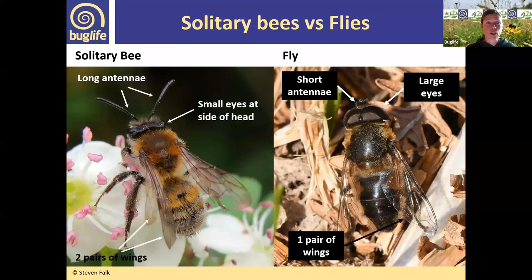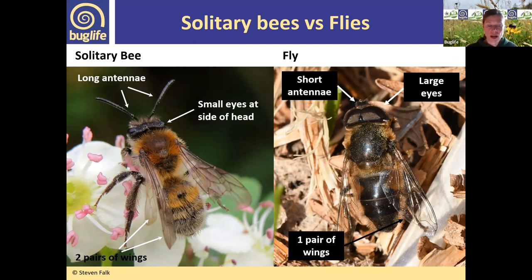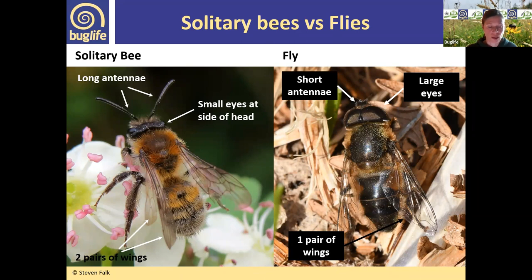When we have a solitary bee, is it a solitary bee or a fly? The same rules apply as for bumblebee versus hoverfly: we look at the number of wings — solitary bees have two pairs, flies have one. We look at antennae length — solitary bee tends to have long antennae, fly tends to have short. And we look at eye size: the fly has big eyes taking up most of the head, whereas the solitary bee has much smaller eyes.